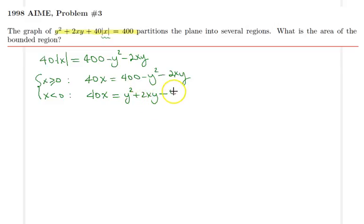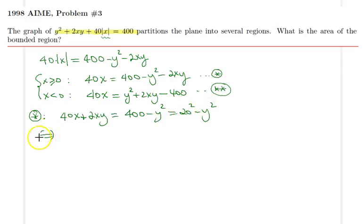The best way would be to study the first and second equations separately. From the first one, we can factorize this expression. Let's move that 2xy to the left hand side: 40x - 2xy = 400 - y², which is simply 20² - y². So we have 2x(20 + y) = (20 - y)(20 + y).